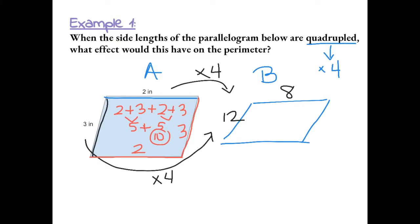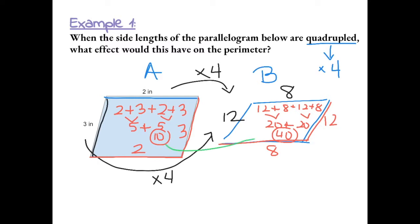This parallelogram, figure B, has a perimeter of 12 plus 8 plus 12 plus 8, because opposite sides are also equal, giving us 20 plus 20, which equals 40. So from the perimeter of figure A, which is 10, to the perimeter of figure B, which is 40, the perimeter quadrupled or is 4 times greater. Therefore, the perimeter would be 4 times greater.